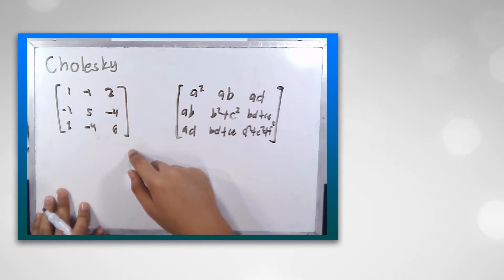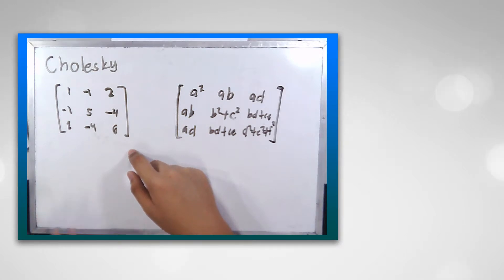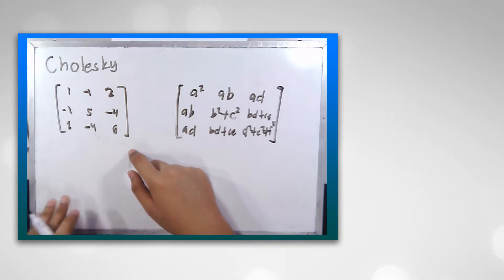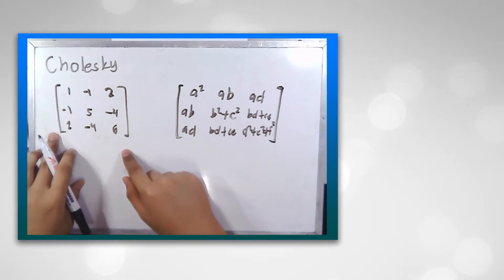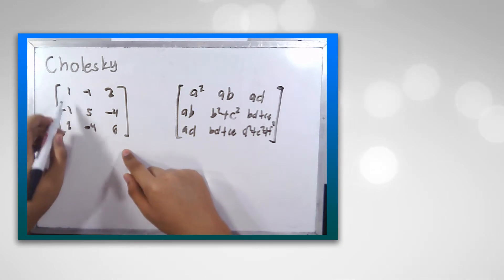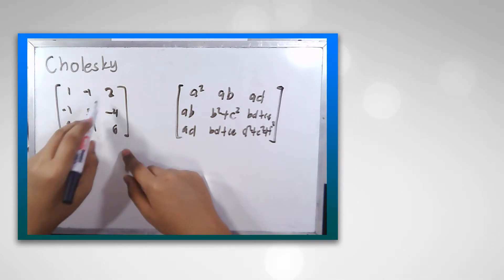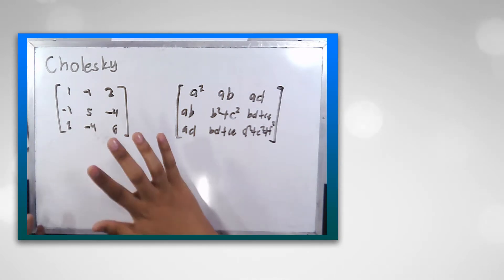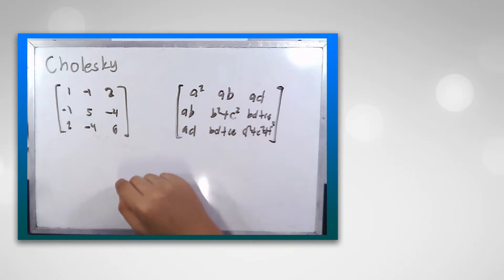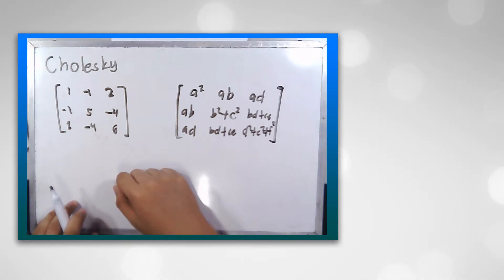Another requirement before we proceed with the Cholesky decomposition is that the matrix we'll be working with must comply with the Hermitian transpose, which means it must be symmetrical. This example — 1, negative 1, negative 1, 2, 2, 5, negative 4, negative 4, 6 — is symmetrical, therefore it passes and we could decompose this using Cholesky.